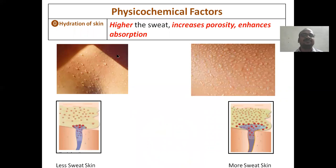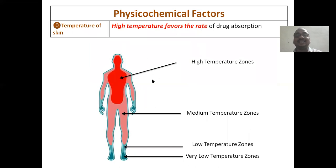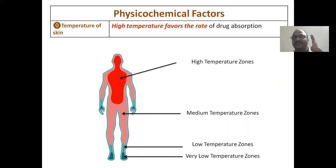Next, sweating: higher sweating means the sweat gland is enlarged and porosity is more, so the drug enters faster, enhancing absorption. Less sweating means less drug enters. Next, temperature zones of the body: if you apply the patch in a high-temperature zone, drug transport is also high because high temperature increases blood flow and the kinetics of drug molecules. Medium, low, and very low temperature zones show progressively slower absorption.